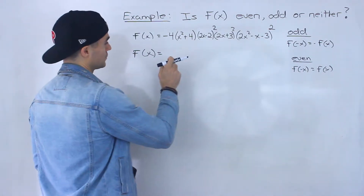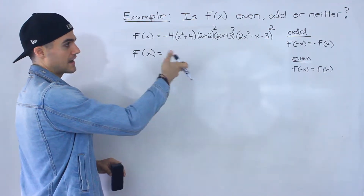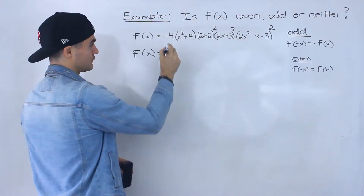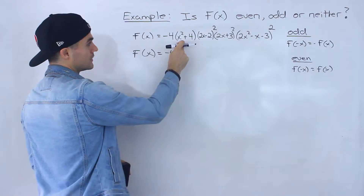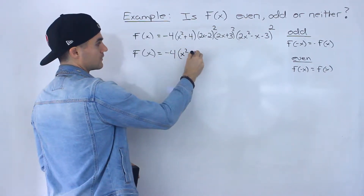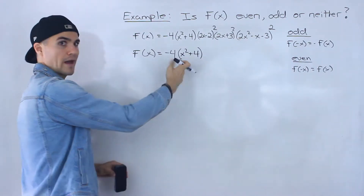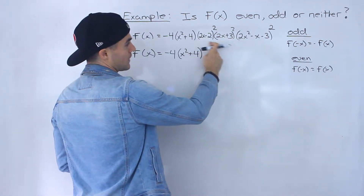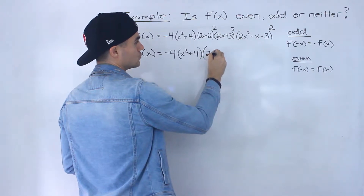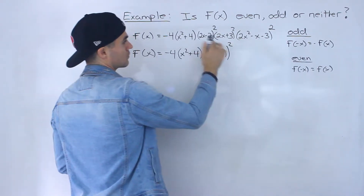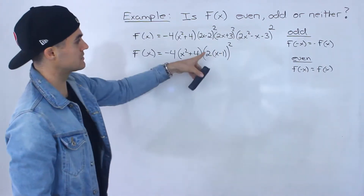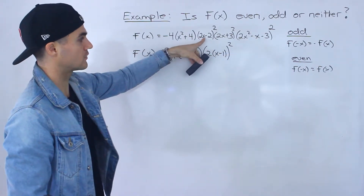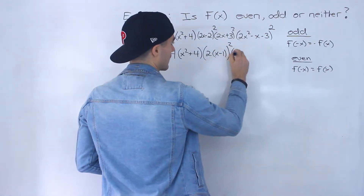So here's what I mean by that. Before we get into finding f of negative x and negative f of x, I'm actually going to try to simplify this a little further. Notice there are a lot of opportunities to simplify. Going through each factor: x squared plus 4, we can't simplify that any further — that can't factor. If this was x squared minus 4, that would factor to x minus 2 times x plus 2. But this 2x minus 2 — notice how we can take out a 2 from that factor, still within the bracket being taken to the power of 2. The 2x plus 3 can't factor any further.